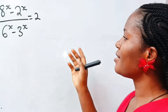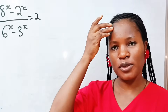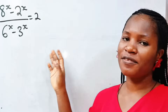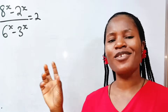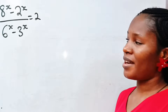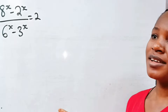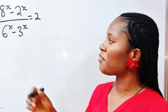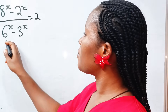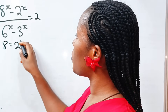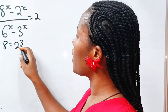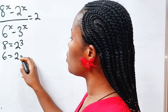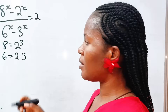We have an interesting algebra question to solve. We are asked to find the value of x. x is equal to 2 to the power of... x is equal to 2 to the power of 3, and 6 is equal to 2 multiplied by 3.